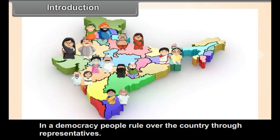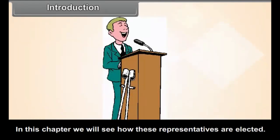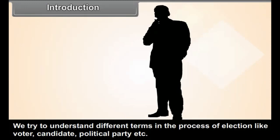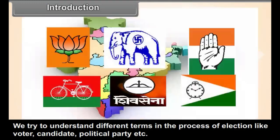In a democracy, people rule over the country through their representatives. In this chapter, we will see how these representatives are elected. We try to understand different terms in the process of election, like voter, candidate, political party, etc.